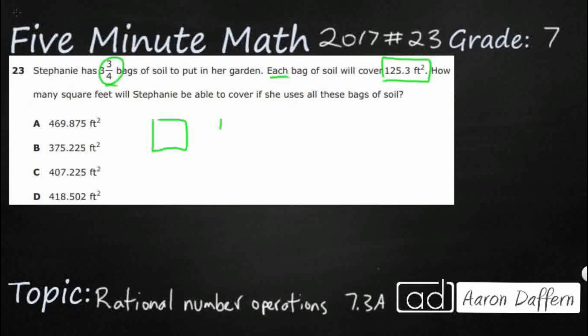So we've got one, two, three, and we'll make that a little bit smaller. That's going to be my three-quarters and that's going to be 125.3, 125.3, 125.3, and then three-quarters of 125.3.